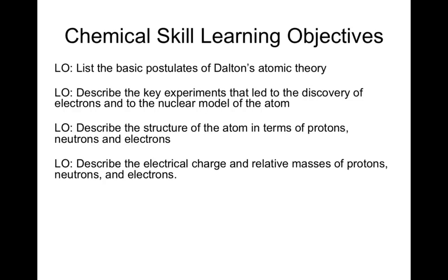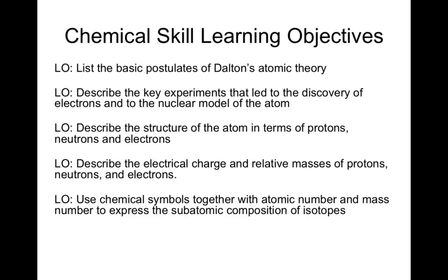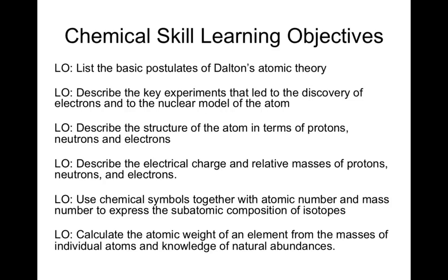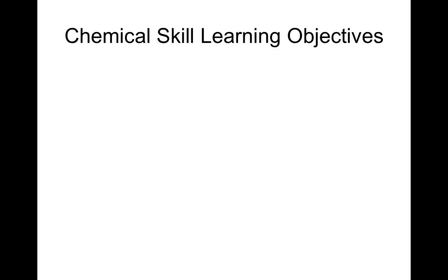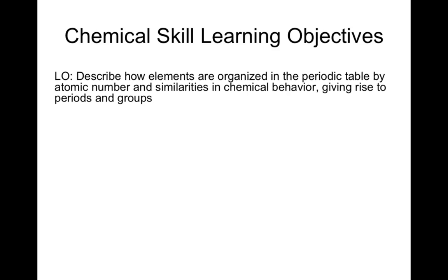You will be able to describe the electrical charge and relative masses of protons, neutrons, and electrons. You will learn how to use chemical symbols together with atomic number and mass number to express the subatomic composition of isotopes. You will know how to calculate the atomic weight of an element from the masses of individual atoms and knowledge of natural abundance. You will describe how elements are organized in the periodic table by atomic number and similarities in chemical behavior, giving rise to periods and groups.